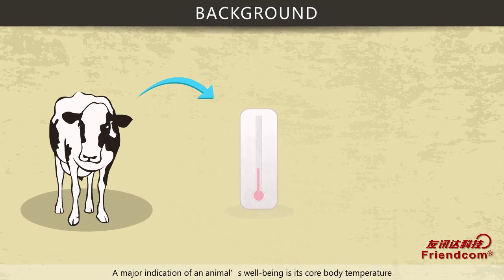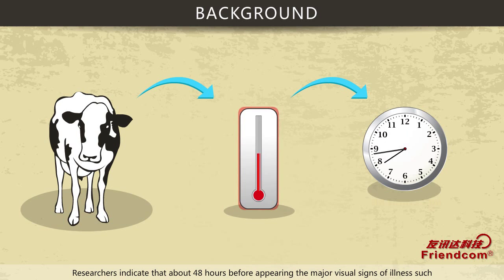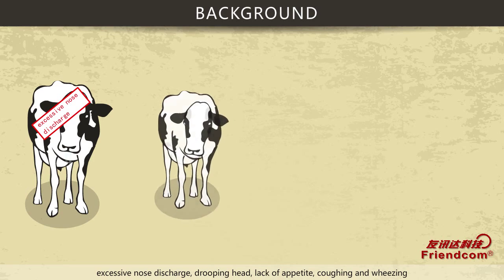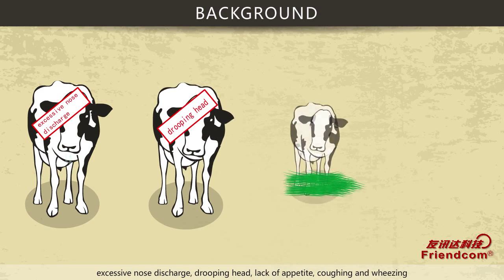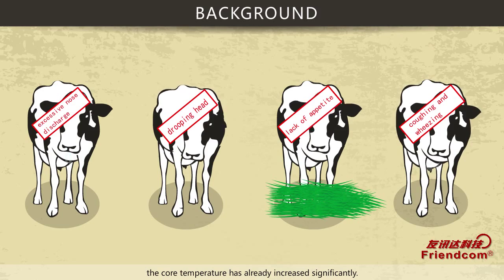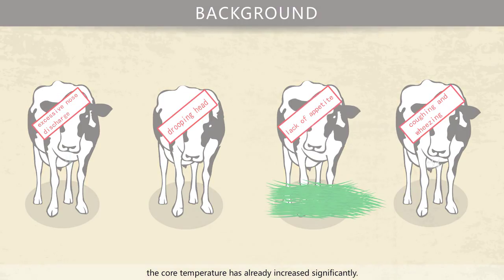A major indication of an animal's well-being is its core body temperature. Researchers indicate that about 48 hours before appearing the major visual signs of illness — such as excessive nose discharge, drooping head, lack of appetite, coughing and wheezing — the core temperature has already increased significantly.